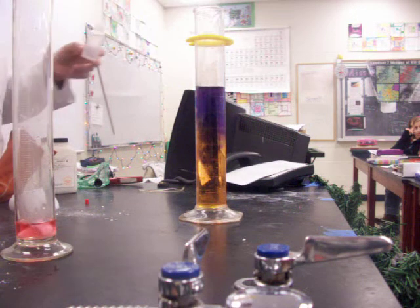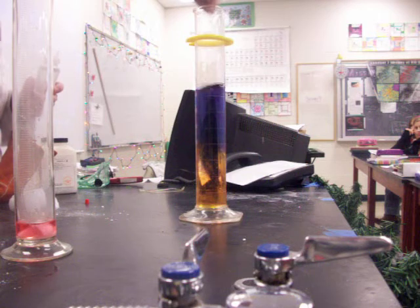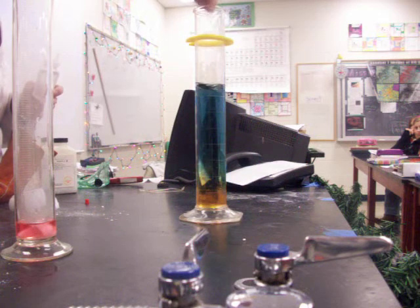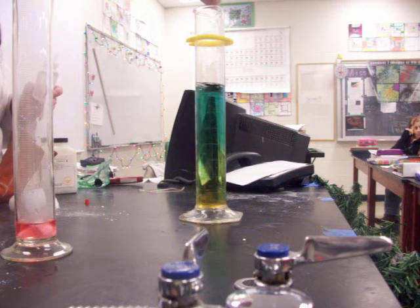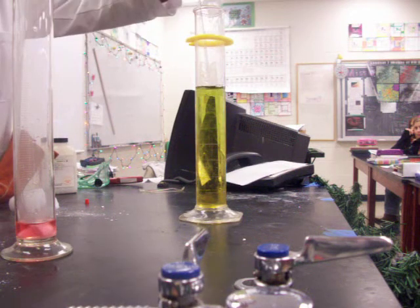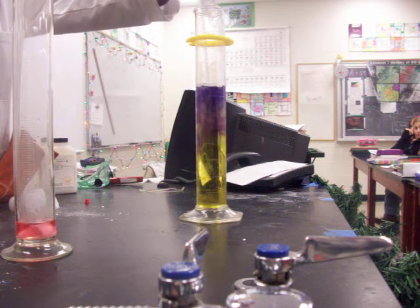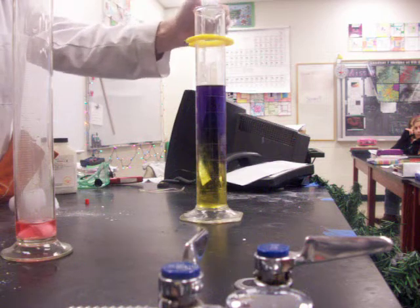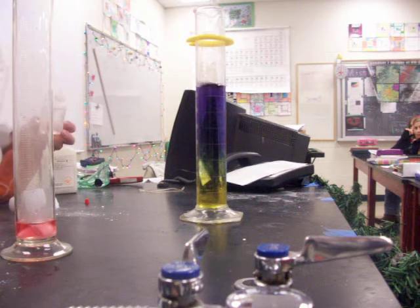And you can see the color change begin to create a rainbow effect inside the beaker. What's happening is the top right now, for example, is basic, while the bottom, where I'm not getting it well stirred, is still in the acidic range.